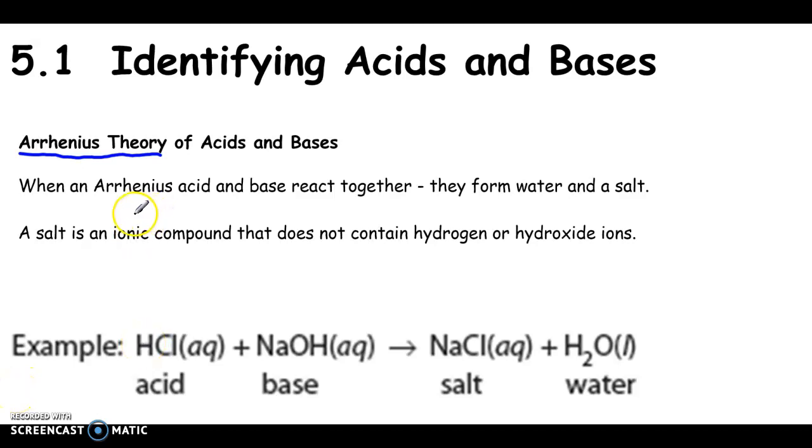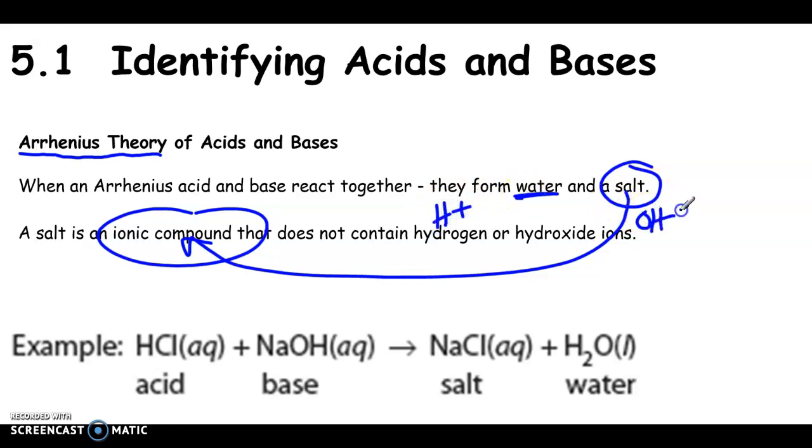So his main idea was that when acids and bases react together, they form water and a salt. So remember when we say the term salt, we mean an ionic compound that does not have hydrogen ions or hydroxide ions. So Arrhenius' definition of an acid is any compound that when it dissolves in water, it produces a hydrogen ion. So it has to have a hydrogen in it.